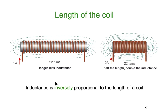The length of a coil is inversely proportional to inductance. Here we have 22 turns, but the inductor on the left is much longer. The one on the right is half the length, and of course half the length gives double the inductance. So inductance is inversely proportional to length — as the length gets shorter, inductance goes up for the same number of turns, and inductance goes down as you make the magnetic path longer.